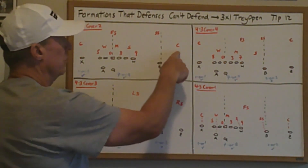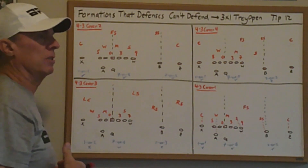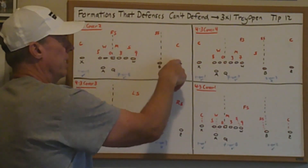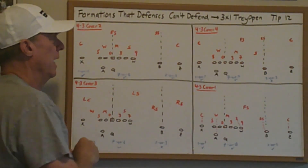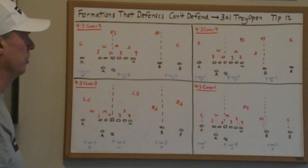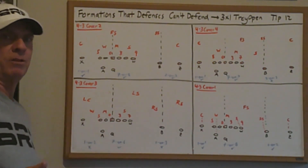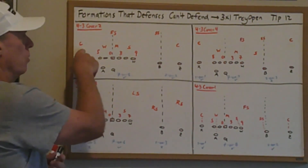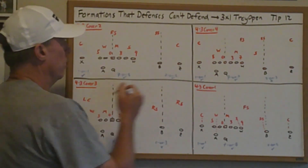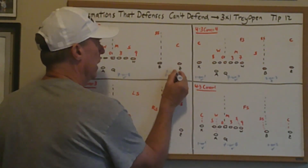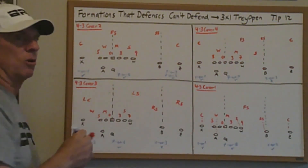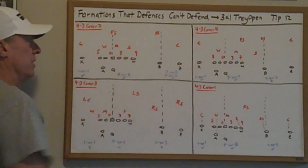In Cover 2 against trips to the field, the corner typically backs off and plays inside because he has the boundary as help, rather than sitting at five yards with his back to the sideline as a boundary corner would. Whether it's 2-on-2 or 3-on-3 to the trips side, the offense likes the opportunity to flow to the field, flow to the boundary, and run. Against Cover 2, all three areas are attractive to attack.